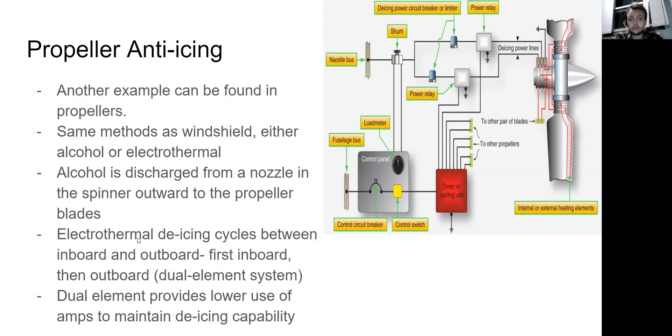And then the electrothermal de-icing cycles between inboard and outboard. First inboard, then outboard. It's a dual element system, meaning that when one side of the system is running, the other side is off to prevent the excessive power draw that this system can create. Dual element provides lower use of amps to maintain de-icing capability. So for a certain amount of time, the one side of the propeller will be heated and the other side will be off. And then after a certain amount of time, the system switches to the inboard and then the outboard and inboard and outboard.